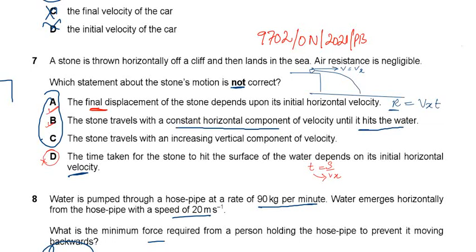The horizontal component of velocity is always constant throughout the journey. The range equals the horizontal component of velocity times t, where t is the time of the journey. Option A states the final displacement depends on the initial horizontal velocity — this is very true. If the horizontal velocity increases, the range increases. So option A is logically correct.